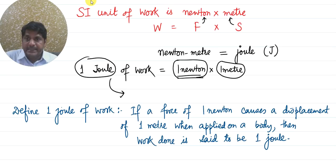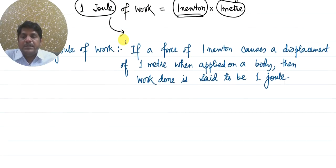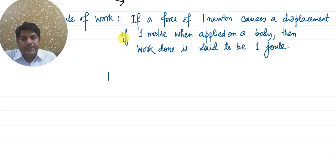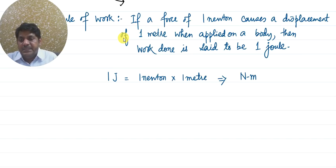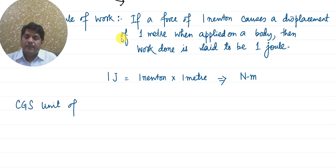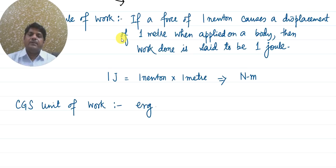1 joule is the SI unit of work. 1 joule = 1 Newton × 1 meter, also written as N·m. In most books it is written as NM, which means joule. Now let us come to the CGS unit of work — this comes in competitive exams. The CGS unit of work is erg.